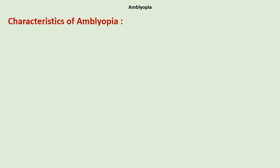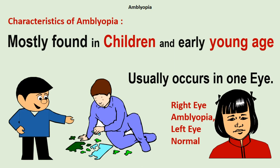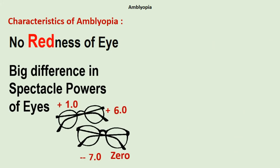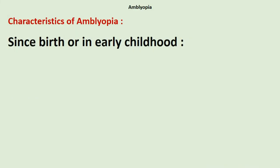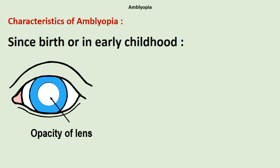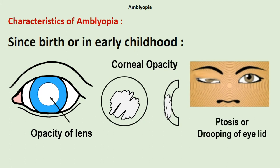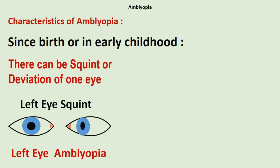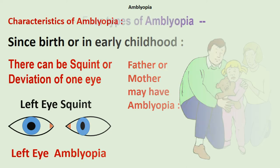Amblyopia is also called lazy eye. Analyzing its characteristics, it is mostly found in children and early young age. It occurs in one eye and rarely in both eyes. There is no redness of the eye. There can be a big difference in spectacle powers between the eyes, or high spectacle power in both eyes since birth or early childhood. There can be cataract or opacity of the lens, haziness or partial opacity of the cornea, ptosis or drooping of the eyelid partially covering the eye, or squint or deviation of one eye. There may also be a family history of amblyopia.